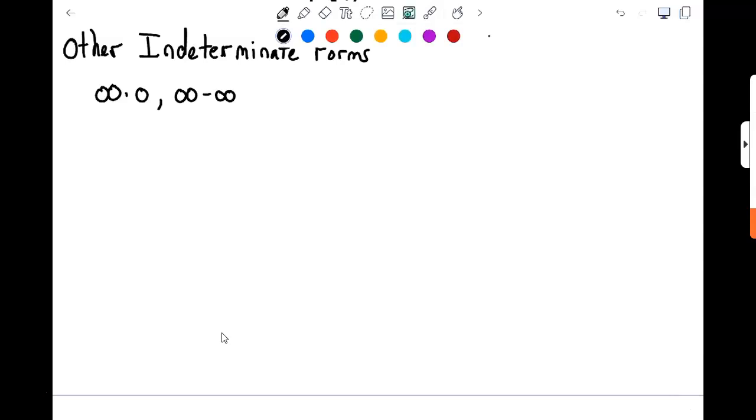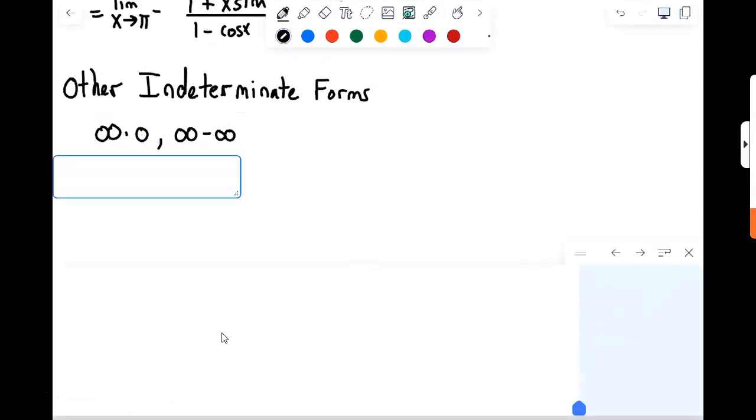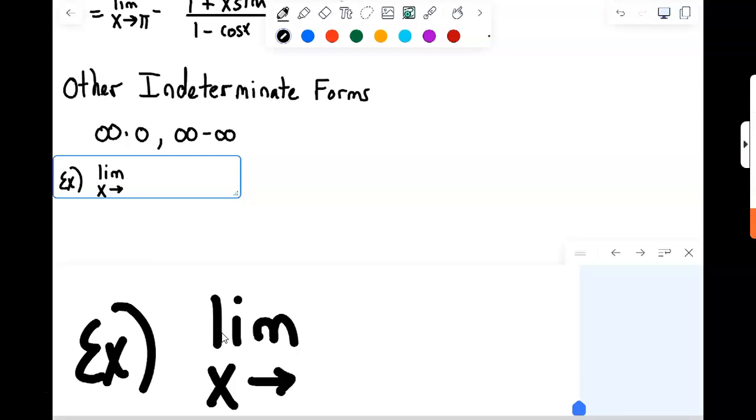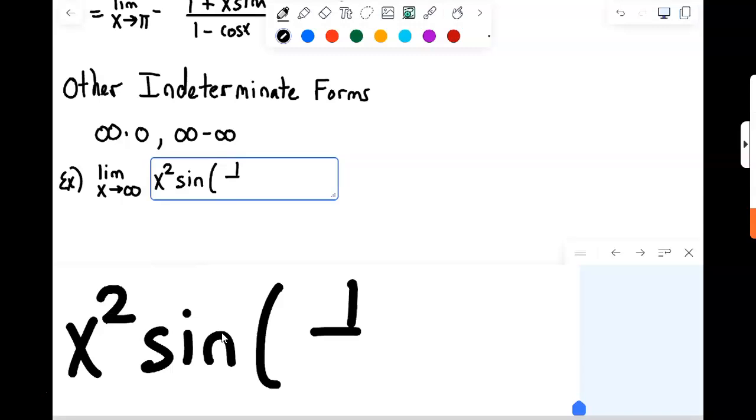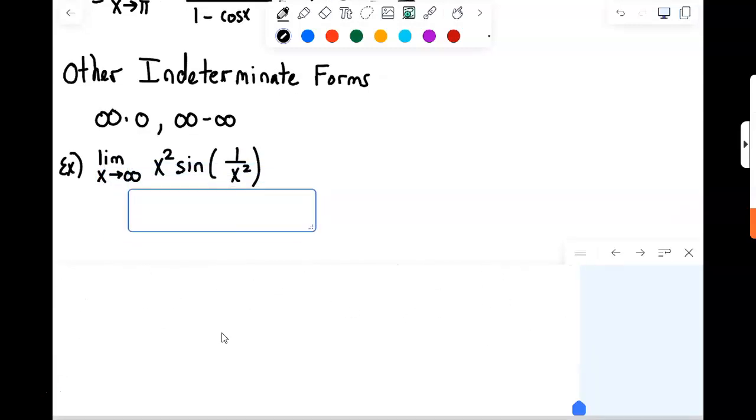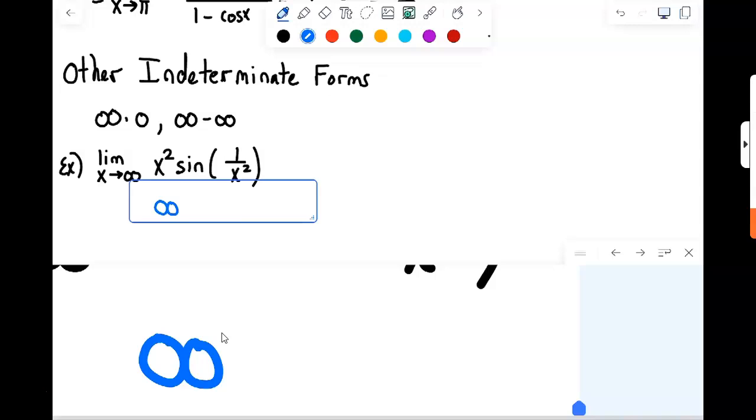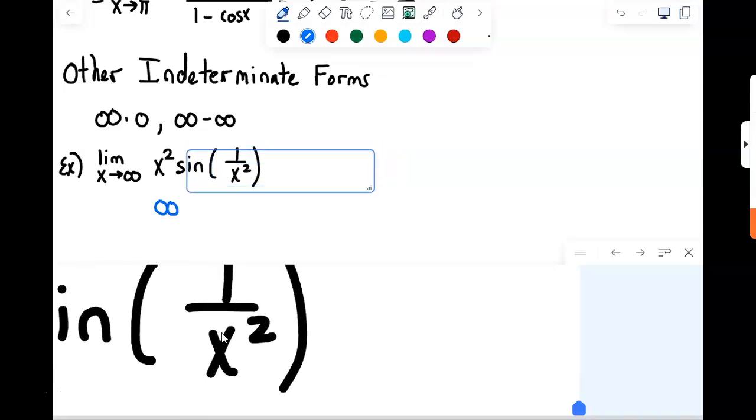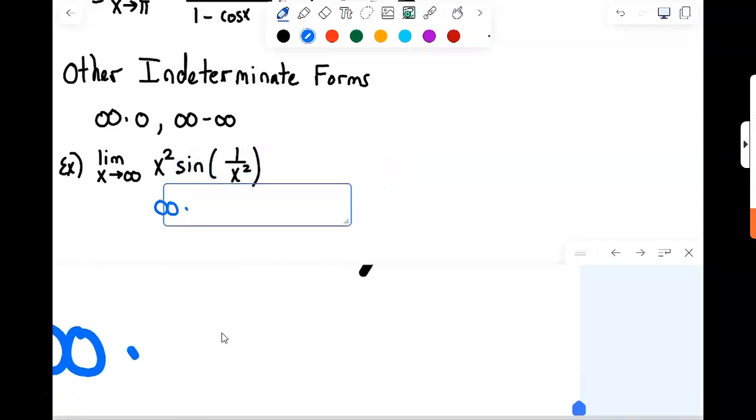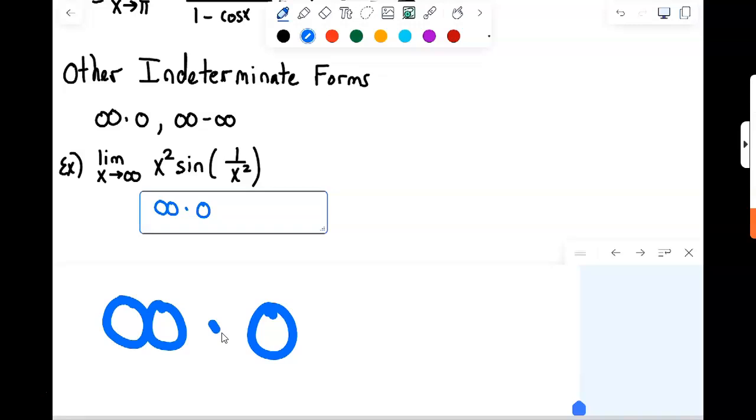So, any time we have a limit that involves infinity times zero, like, for example, the limit as x approaches infinity of x squared sine of one over x squared. As x goes to infinity, x squared would go to infinity. As x goes to infinity, x squared would go to infinity. One divided by infinity would be zero. So, this would be sine of zero. Sine of zero is zero. So, here we have infinity times zero.